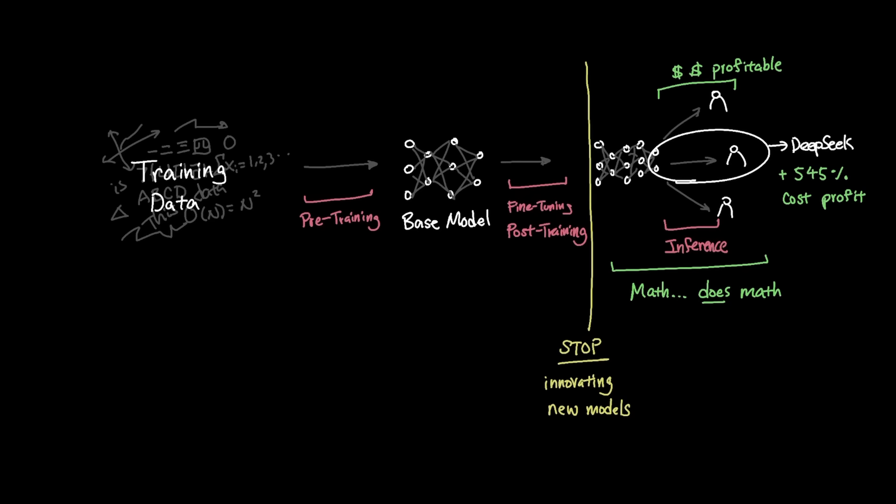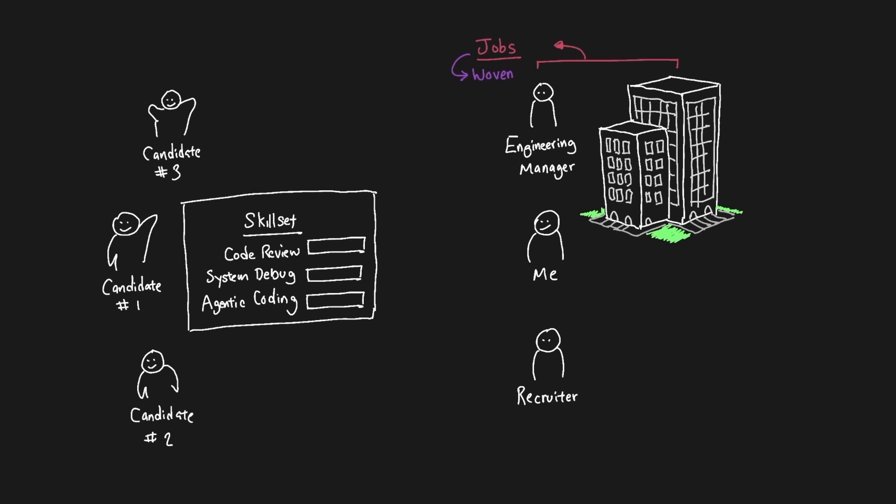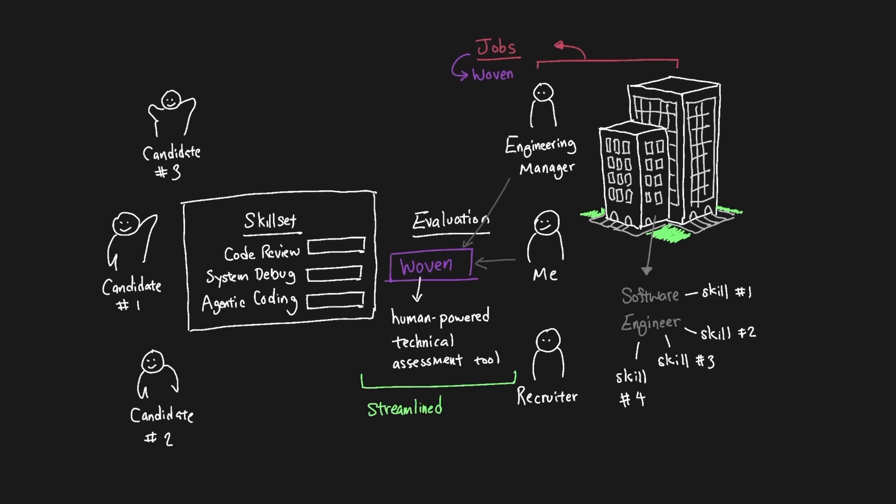And pursuing a business venture requires you to have the right talent, which is why I wanted to bring up Woven who's sponsoring this video. I've been looking to hire a software developer in my previous company, and one thing I always found was that candidates always had different skill sets. Now with AI agentic programming coming up, coding evaluations for each role took a lot of time and effort to build scenarios and give feedback. Woven is a human-powered technical assessment tool that makes hiring streamlined. If you're looking to hire engineers, Woven is offering 14 days free trial with 20% off of your first hire. Check the link in the description.